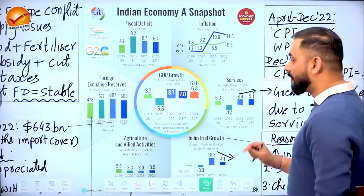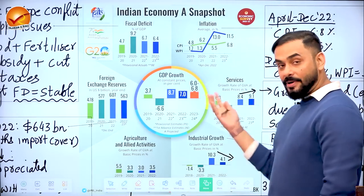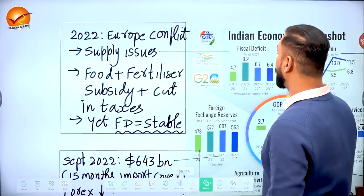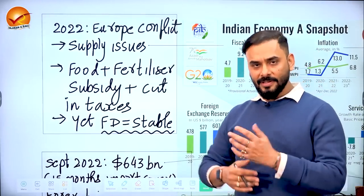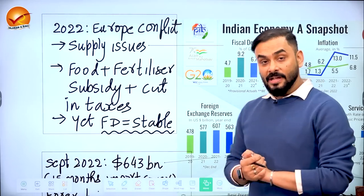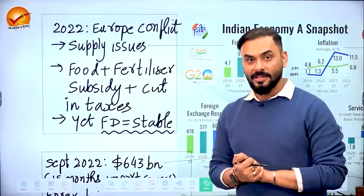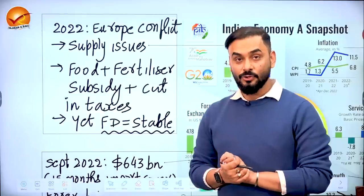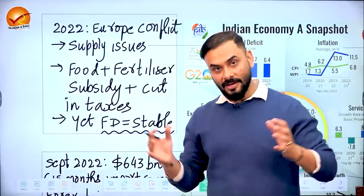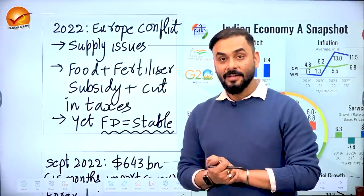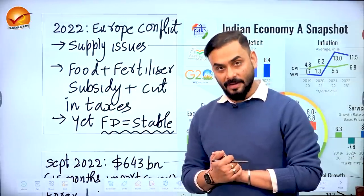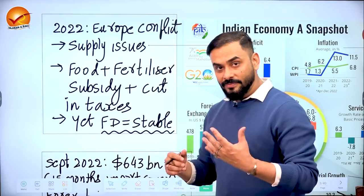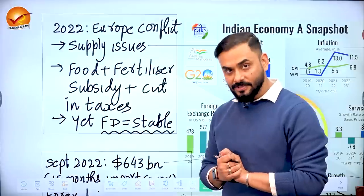Let's look at India's condition in terms of fiscal deficit. Fiscal deficit is essentially government borrowings — when the government has to borrow money to finance expenditure. In 2022-23, the Russia-Ukraine conflict caused commodity prices, oil prices, metal prices, and natural gas prices to rise, along with supply chain problems. The government had to provide food and fertilizer subsidies and reduce custom and excise duties to control inflation.